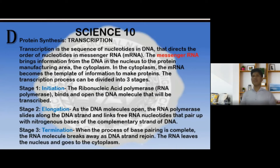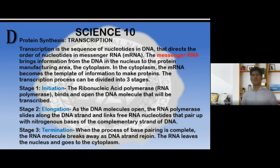The transcription process can be divided into three steps. First, initiation: the RNA polymerase binds and opens the DNA molecule that will be transcribed. As the DNA molecule opens, the RNA polymerase slides along the DNA strand and links free RNA nucleotides that pair up with nitrogenous bases of the complementary strand of the DNA. Stage 3 is termination: when the process of base pairing is complete, the RNA molecule breaks away as the DNA strand rejoins. The RNA then leaves the nucleus and goes to the cytoplasm.